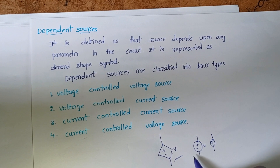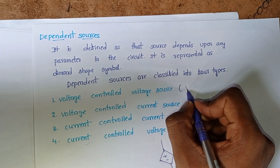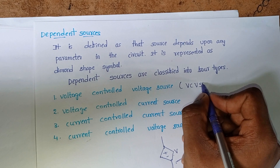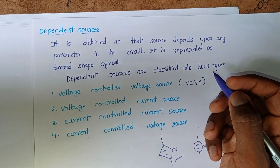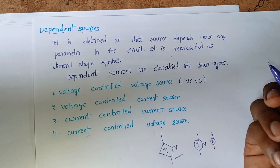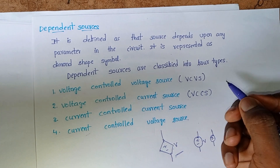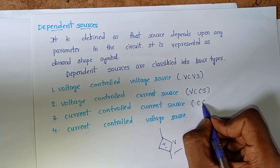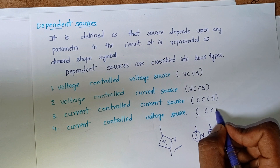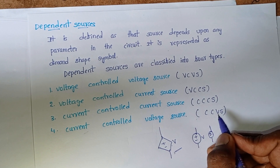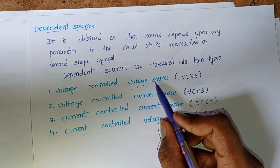The first one is voltage controlled voltage source, also termed as VCVS. The second one is voltage controlled current source, or VCCS. The third one is current controlled current source, or CCCS. The last one is current controlled voltage source, or CCVS.